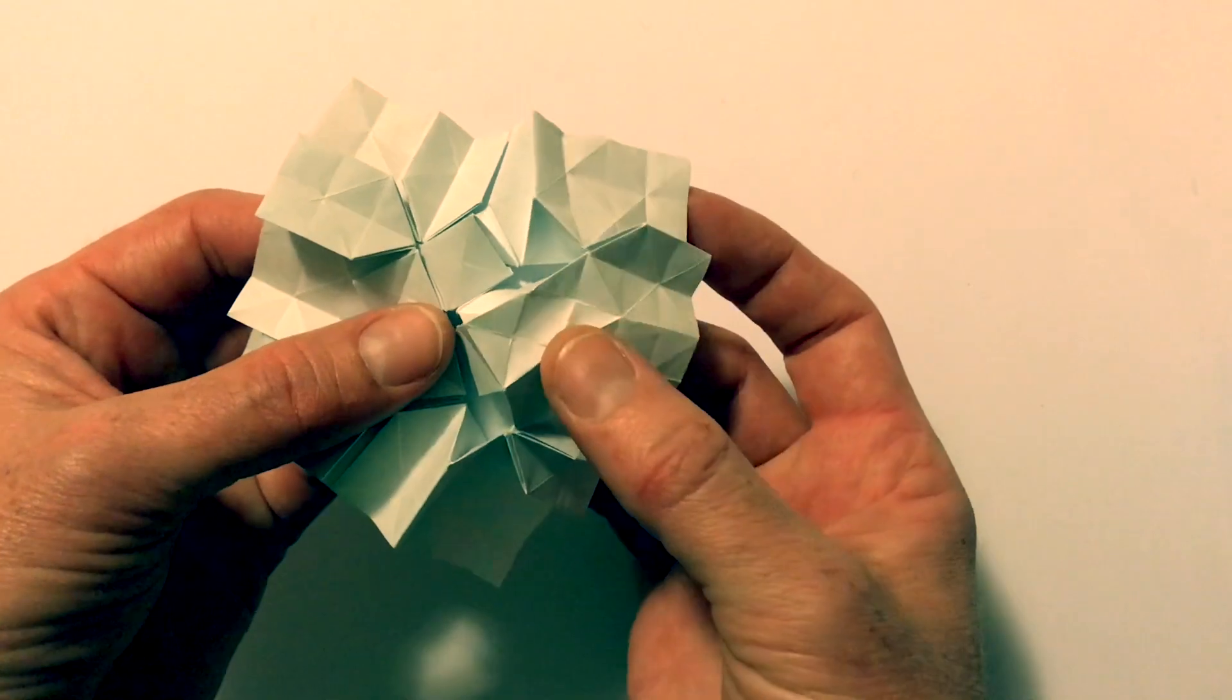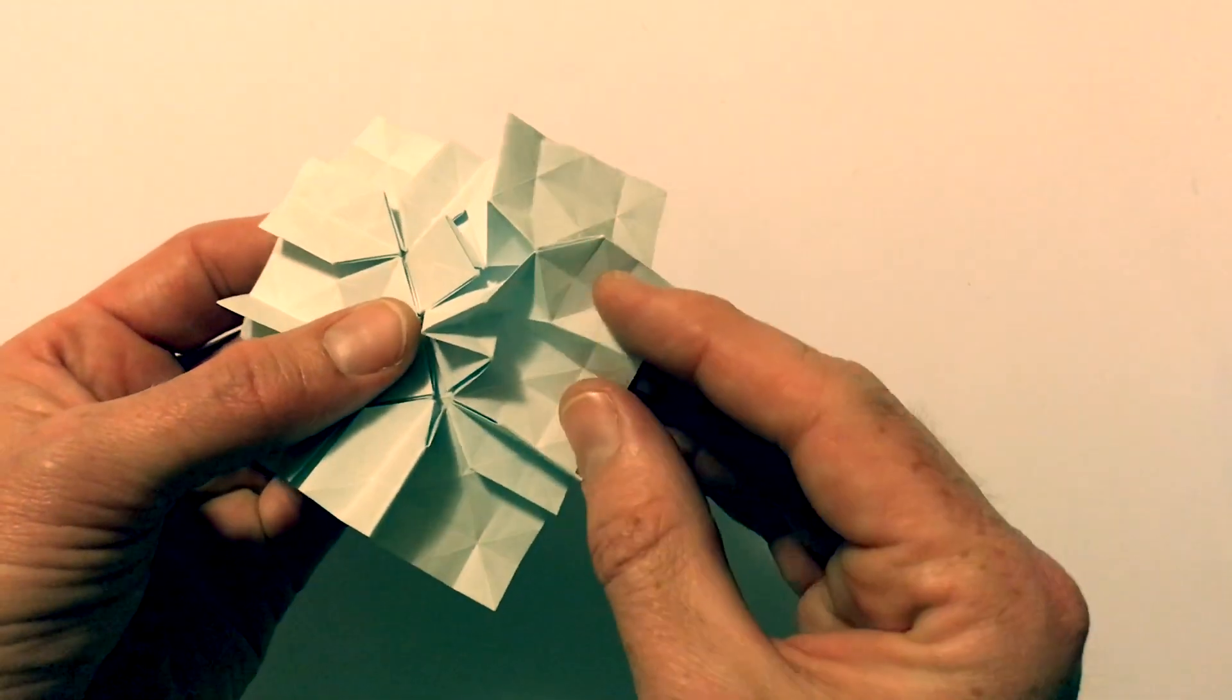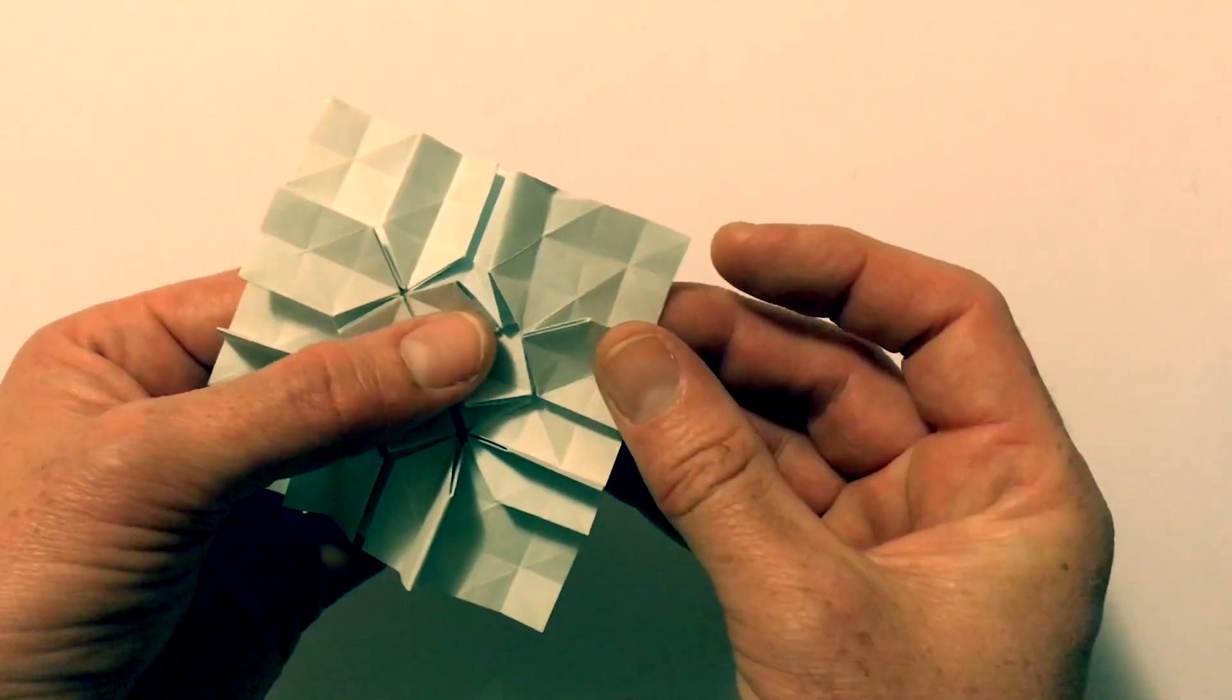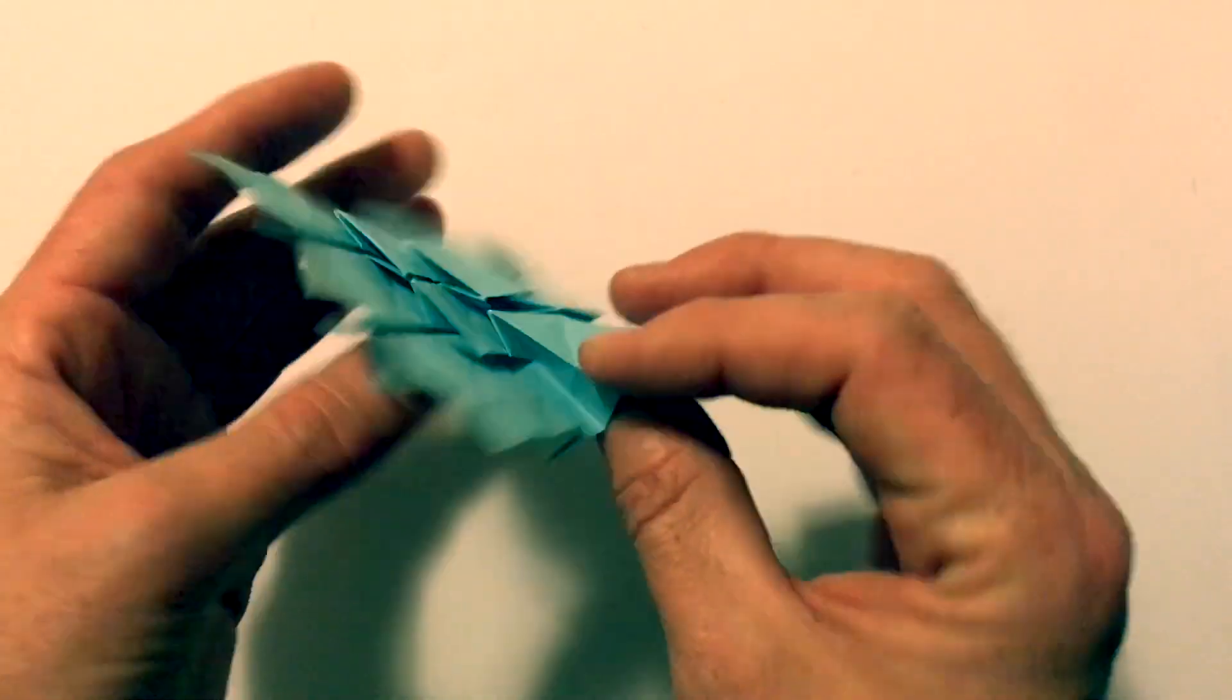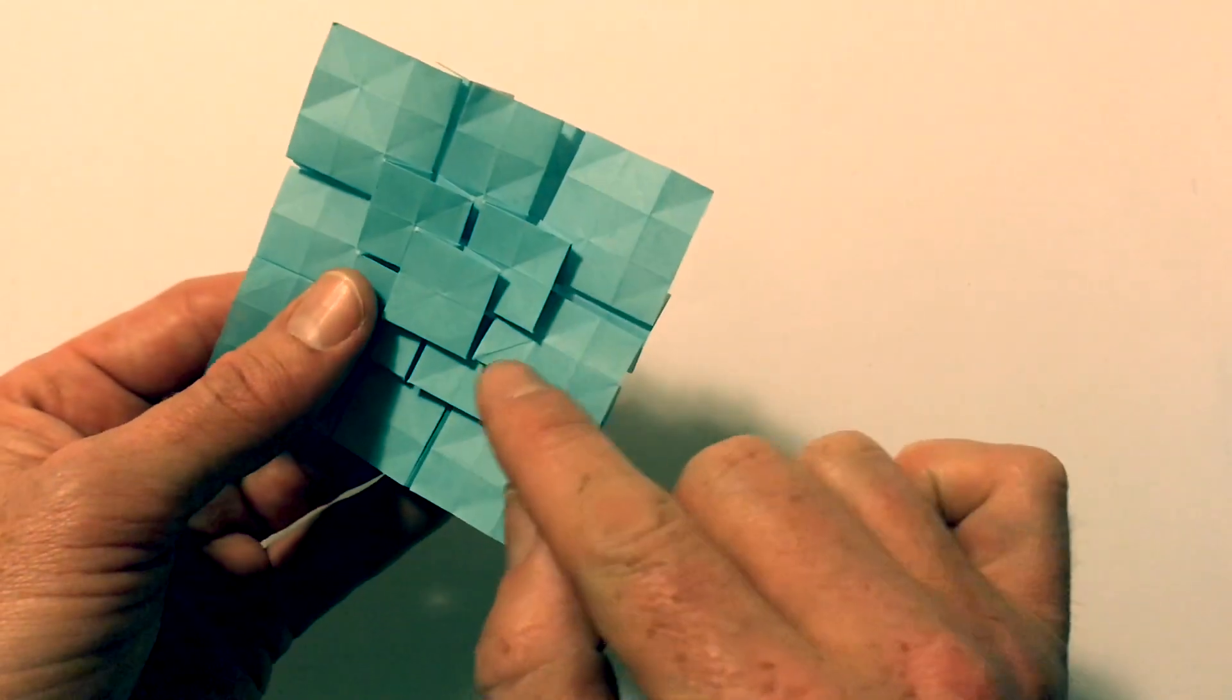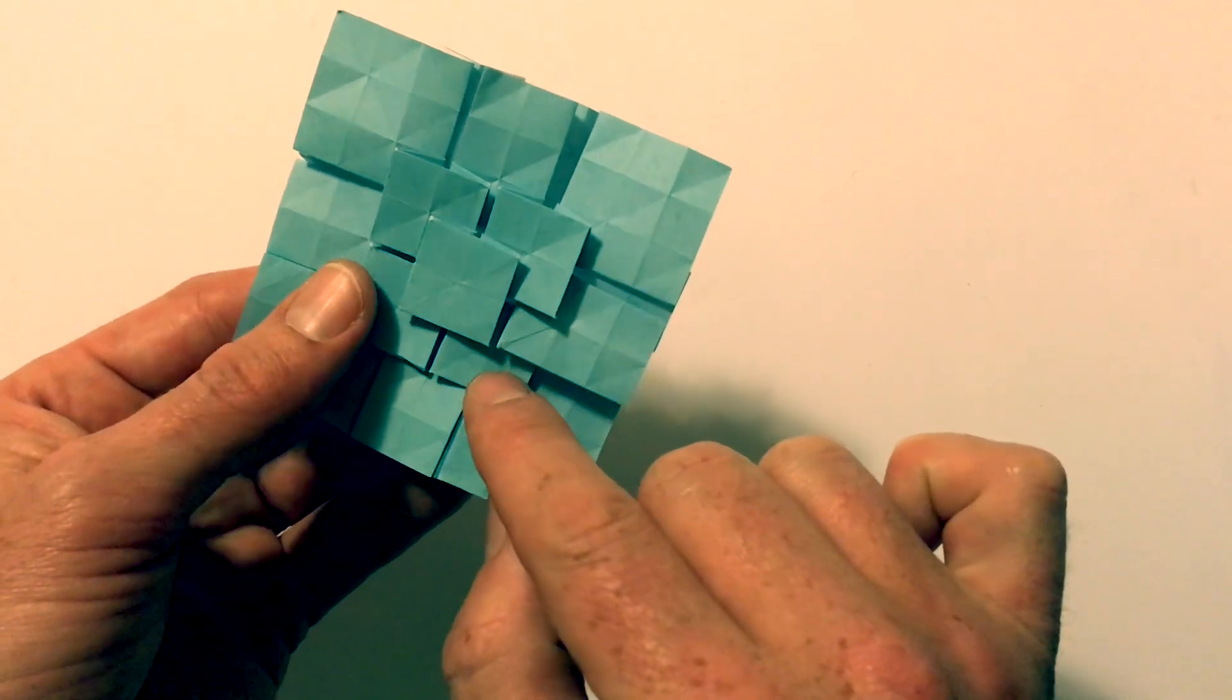Okay, then you sink just there and it does it by itself. If you've done your creases in the right direction it just does it by itself, and what you've done is sunk the corner of this tile.